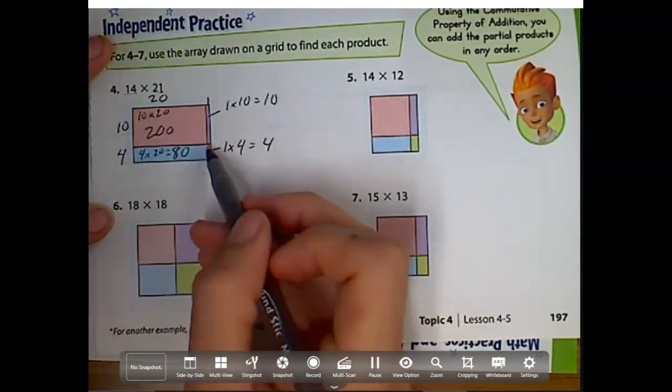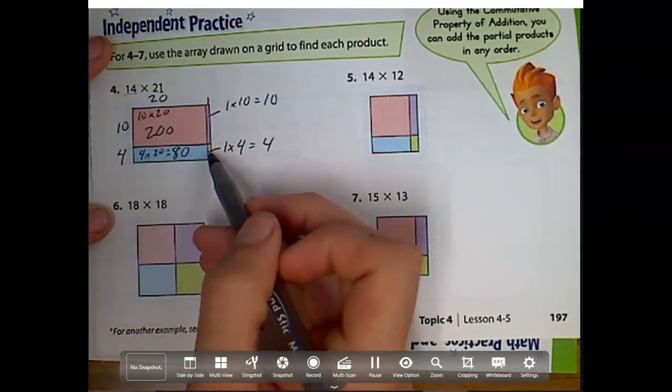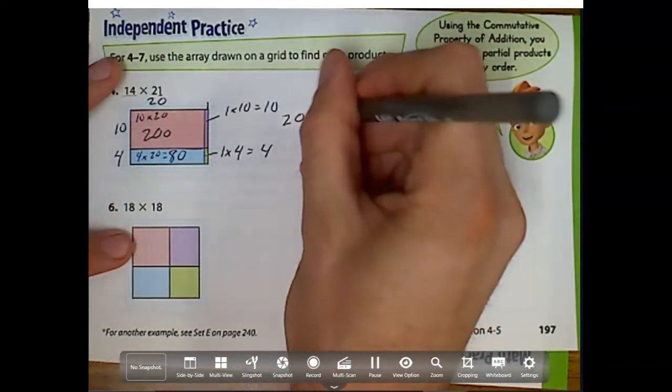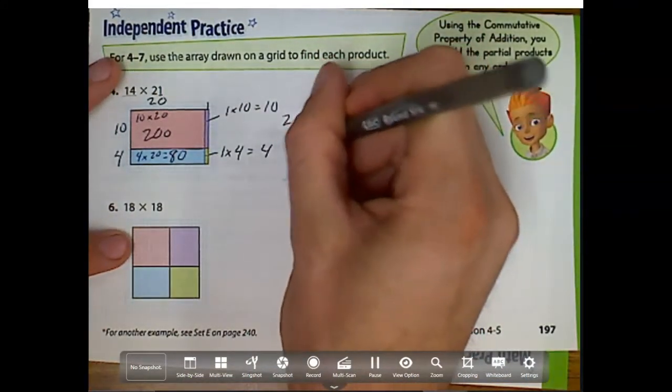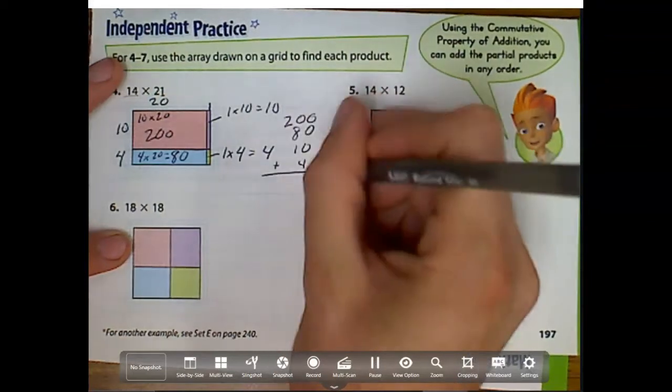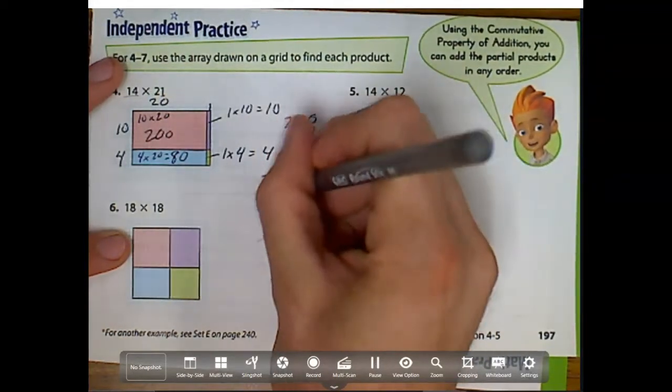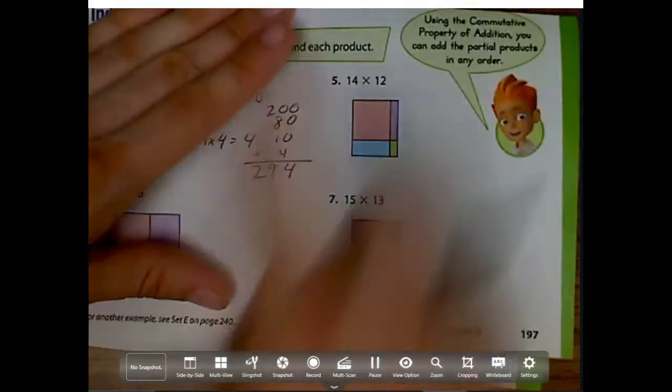Remember, if we're ever unsure how long it is, we can always count those blocks. 1, 2, 3, 4. Now what do we do? We add them all up. So 200 plus 80 plus 10 plus 4 is 294.